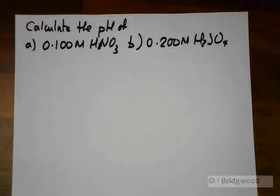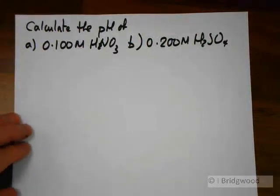So here we have two problems. Calculate the pH of a 0.1 molar nitric acid solution and a 0.2 molar sulfuric acid solution.